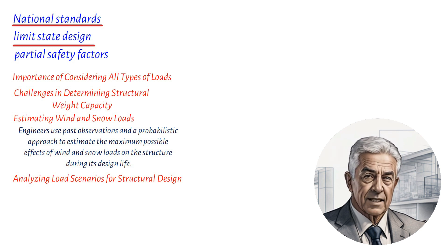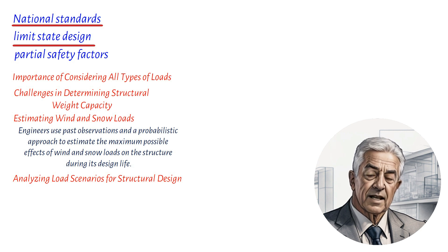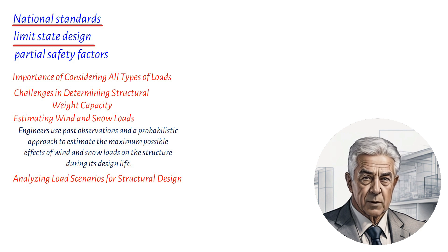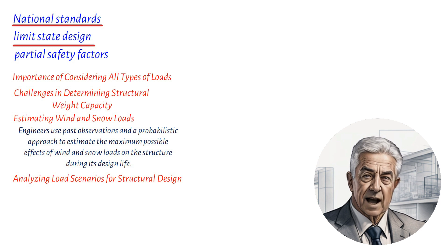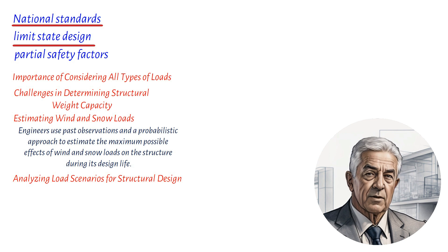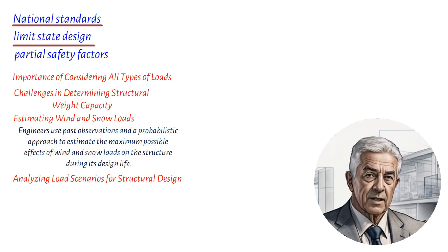However, in practice, the actual partial safety factors used incorporate significant elements of the global safety factor. This means that they don't represent a rigorous probabilistic treatment of the uncertainties of the actions. In other words, engineers err on the side of caution and use safety factors that may be higher than what's strictly necessary.